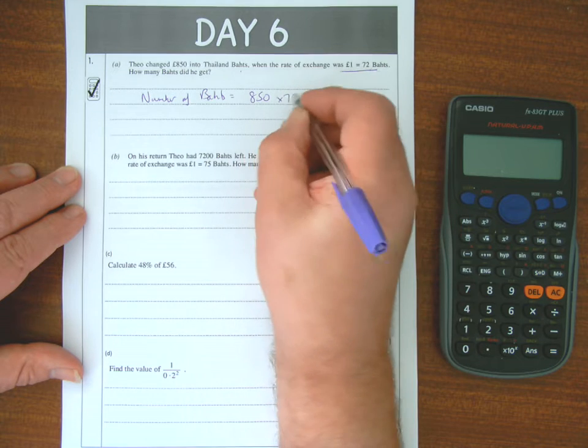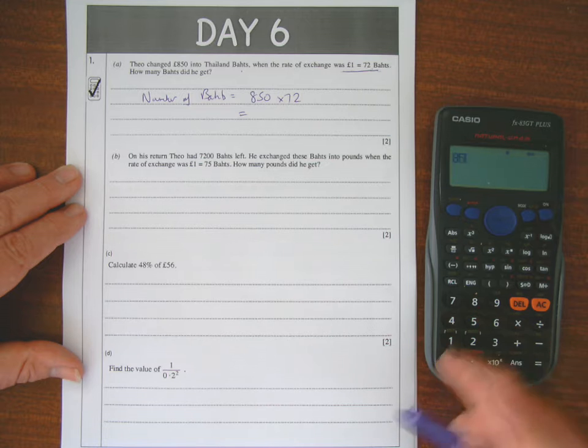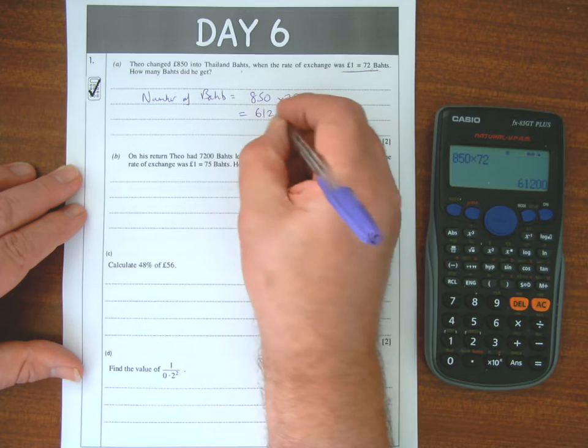we get 72, so 850 times 72. So that's 61,200.